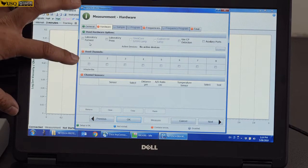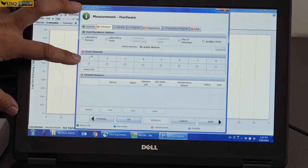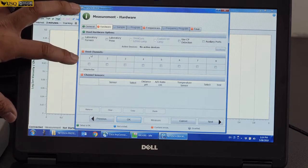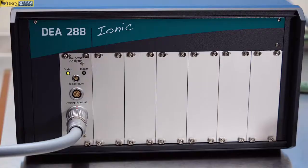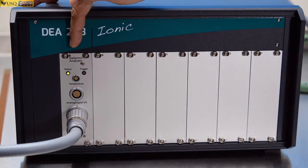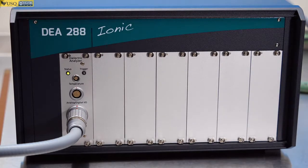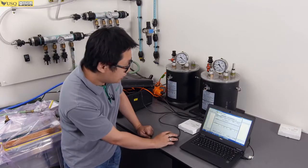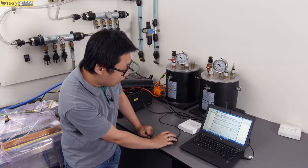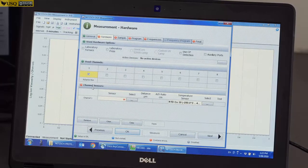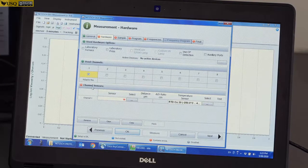Now, we're going to the used channel. For the used channel, you can look at the DA instrument. If you look at the instrument, we are connected to the first channel. Then, we just click one over here. Once we click one, you can see that this becomes green.